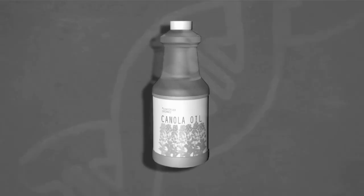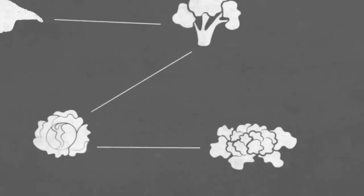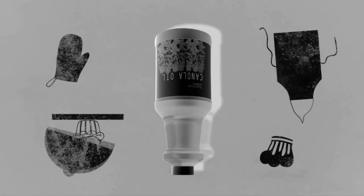Canola oil is related to broccoli and cauliflower. It's versatile in cooking and baking and is considered healthy.